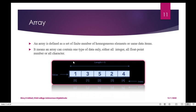Array is defined using a cell and an index. Array of 0, array of 1, array of 2, array of 3, array of 4 — I have corresponding values: A[0]=1, A[1]=3, A[2]=5, A[3]=2, A[4]=4. Array is defined as a set of a finite number of homogeneous elements. This is a linear data structure.